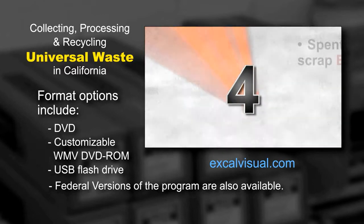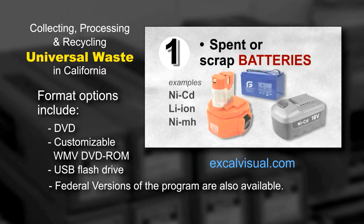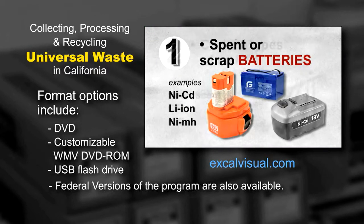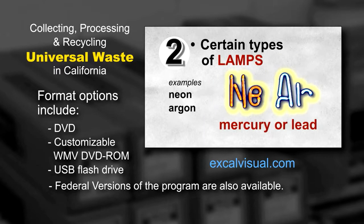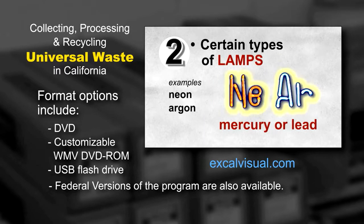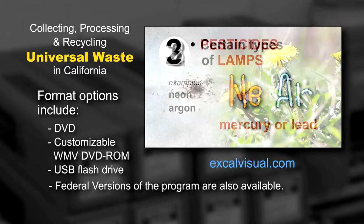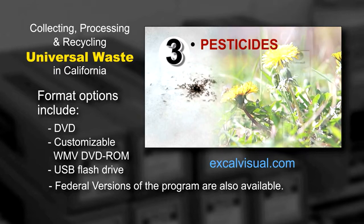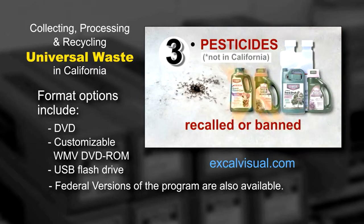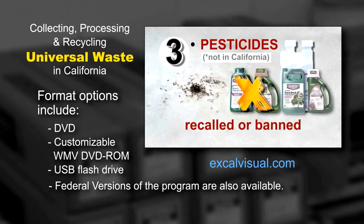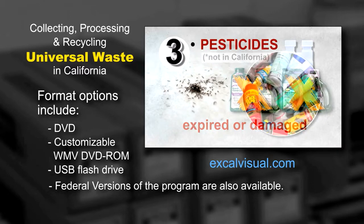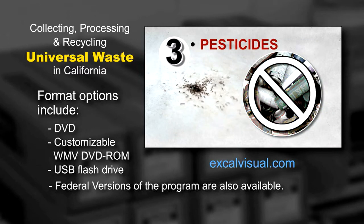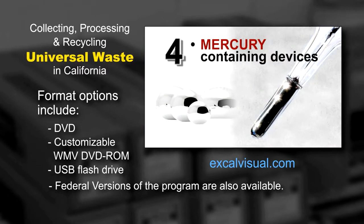The four types are: spent or scrap batteries; certain types of lamps with mercury or lead; pesticides that have been recalled, banned from use, are expired, damaged, or are no longer needed; and mercury-containing devices.